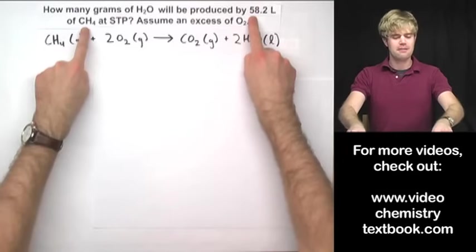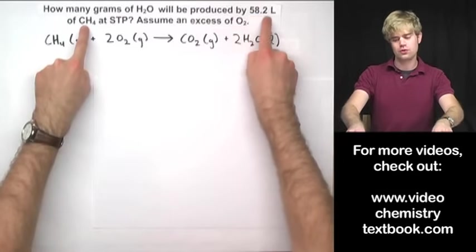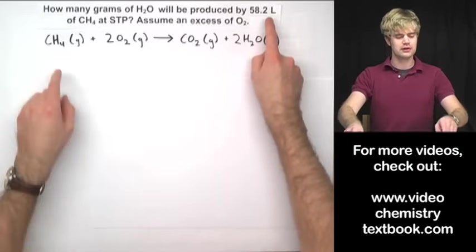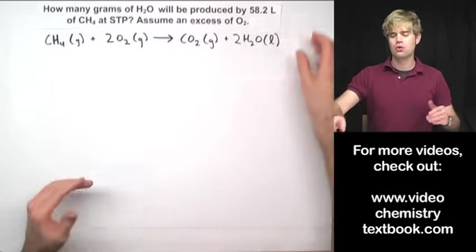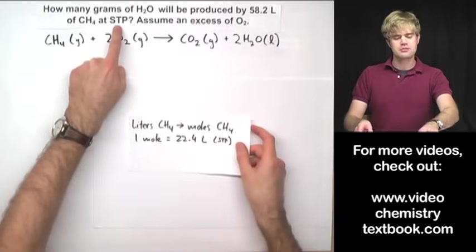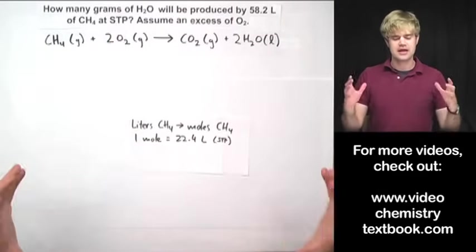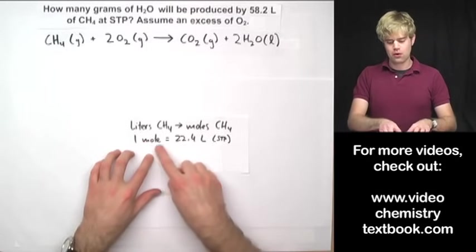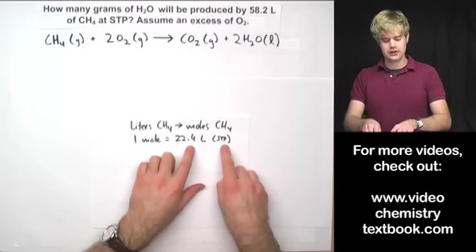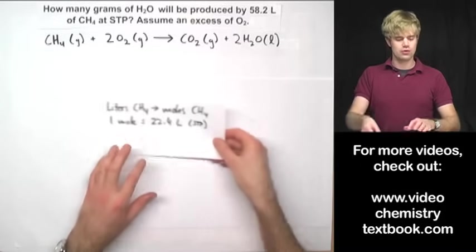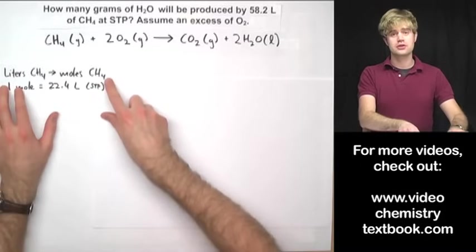The problem gives me an amount of CH4, not in moles, but in liters. So the first thing that I have to do is go from liters of CH4 to moles of CH4. Since the problem states that it's at STP, I can use the fact that one mole takes up 22.4 liters of space, and that's how I'm going to convert from liters of CH4 to moles of CH4. So this is my first step.